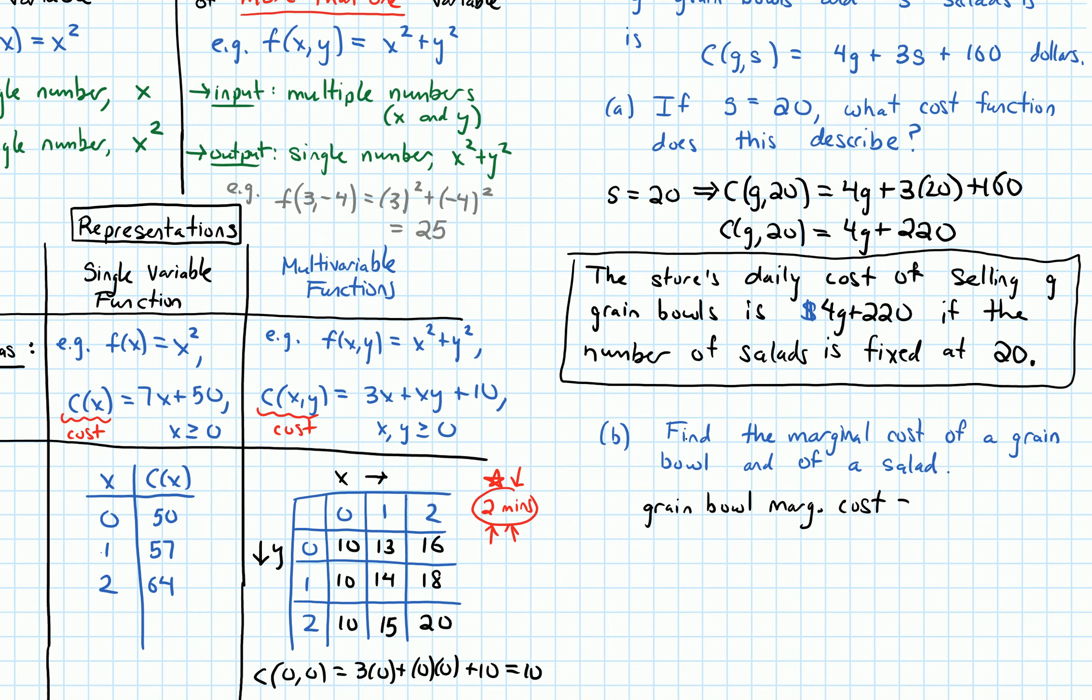So let's talk about a grain bowl marginal cost. So let's remind ourselves what marginal cost is. It's the cost of one more grain bowl. And in this case, because there's another variable, salads, I need to keep the number of salads fixed.